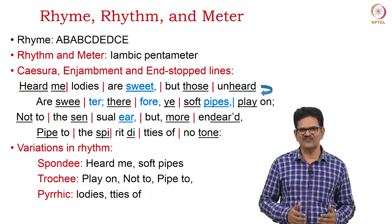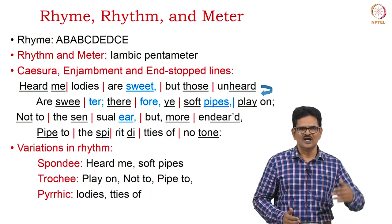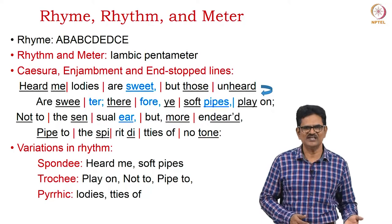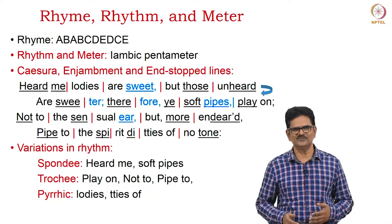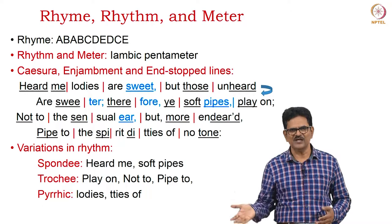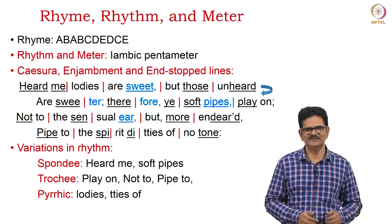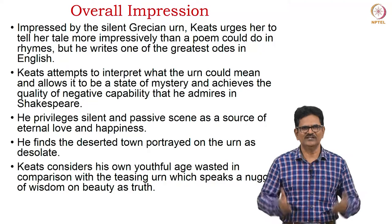For example: 'Heard melodies are sweet, but those unheard are sweeter; therefore, ye soft pipes, play on — not to the sensual ear, but more endeared, pipe to the spirit, ditties of no tone.' We have variations in rhythm, including spondee in 'heard me' and 'soft pipes,' trochee in 'play on' and 'not to' and 'pipe to,' and pyrrhic in the second part of 'melodies' and the second part of 'ditties.'